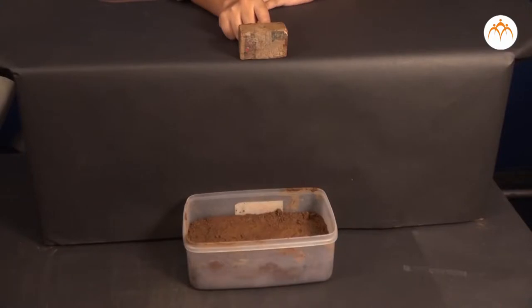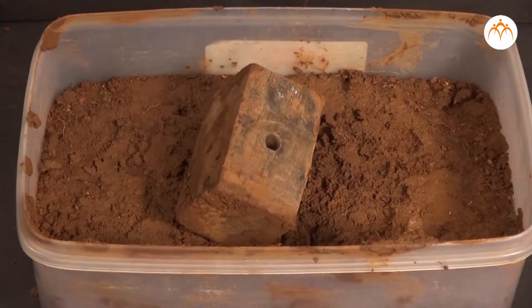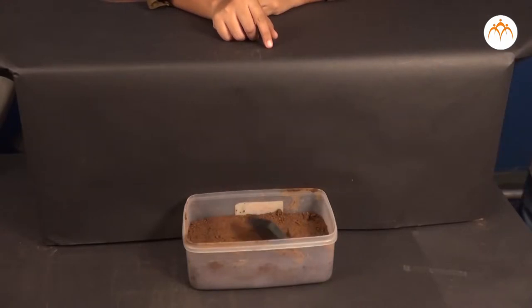First, mix soil and water in the flat container. Keep this container near the legs of the table. Now, push the wooden and metal blocks of the same size in such a way that they fall into the flat container.